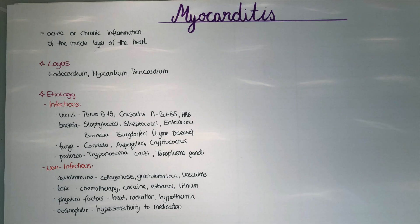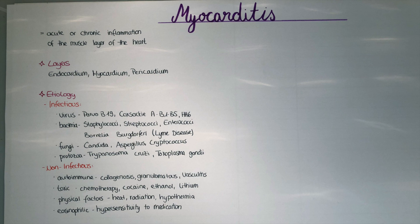Myo meaning muscle, cardio meaning heart, and itis meaning inflammation. So myocarditis is the acute or chronic inflammation of the muscle layer of the heart. Just to recap the different layers: we have the endocardium, the innermost layer of the heart, the myocardium in the middle consisting of muscle cells, and the pericardium surrounding the heart. Many cases of myocarditis are asymptomatic or present only with mild symptoms, but myocarditis is one of the leading causes of spontaneous cardiac arrest in athletes.